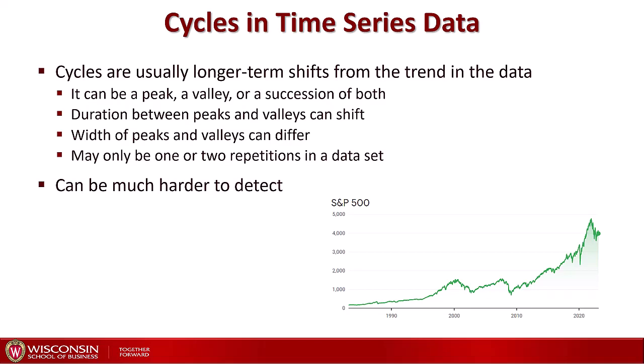You might have only one or two repetitions of such a peak or valley in a dataset, unlike seasonality where usually you have many repetitions. They can be much harder to detect.